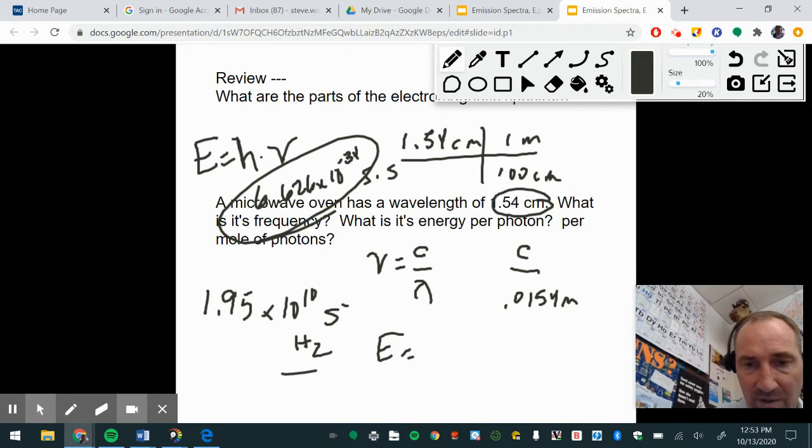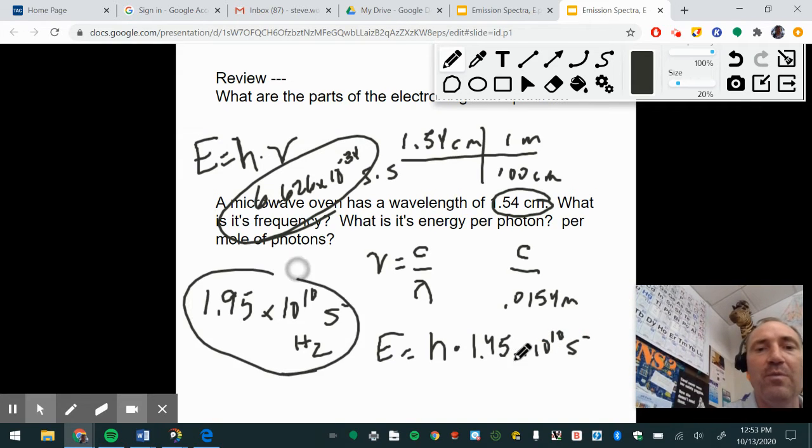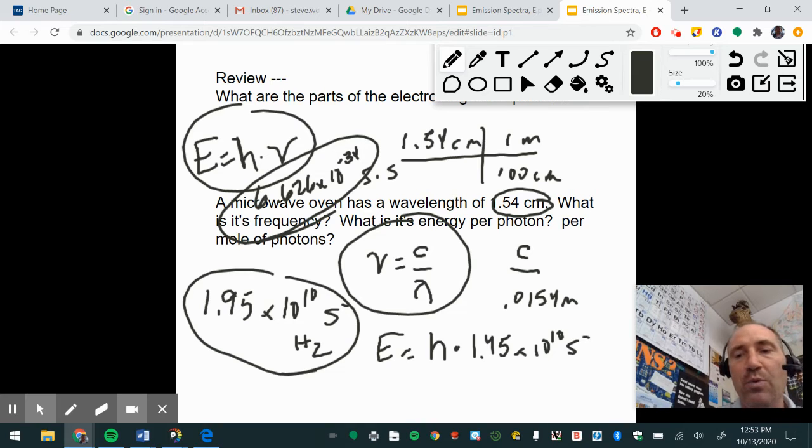E is equal to the Planck's constant, H, times 1.95 times 10 to the tenth hertz. And that's this answer from a previous question. So it's typical in this one that you use this formula and this formula together to find different portions of it. In fact, you could substitute frequency for like C divided by lambda, it means the same thing.